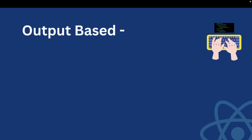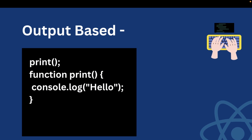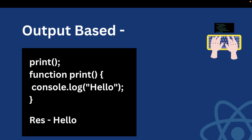Based on the same concept, the interviewer gave me another coding snippet to guess its output. The output is 'hello'. Why? Because hoisting works with function declarations as well. Even before declaring the function we have called it and it gives us the result. However, hoisting works with function declarations but not with function expressions.